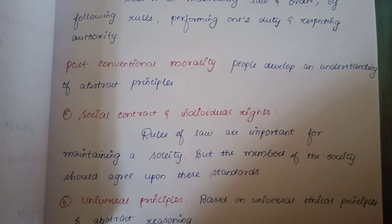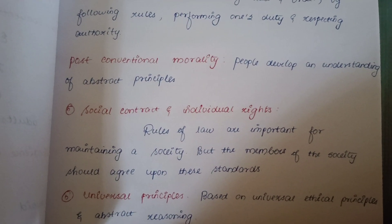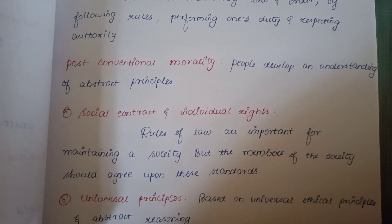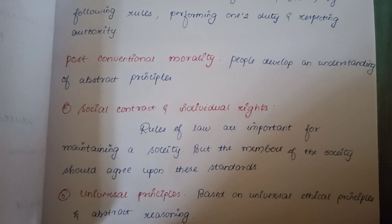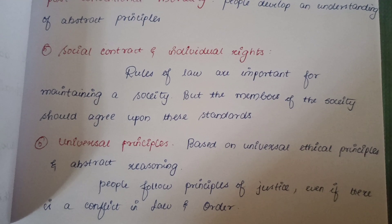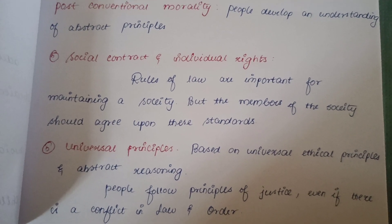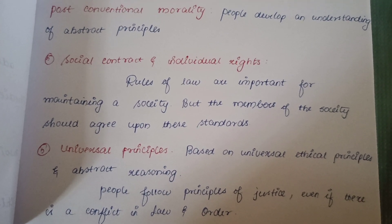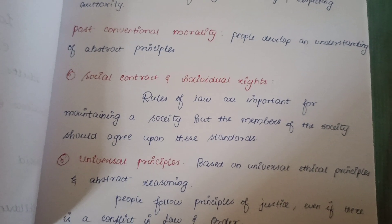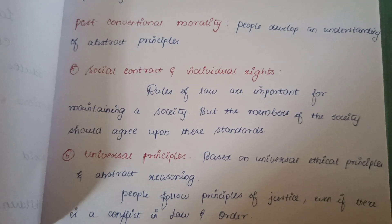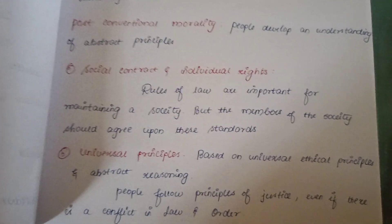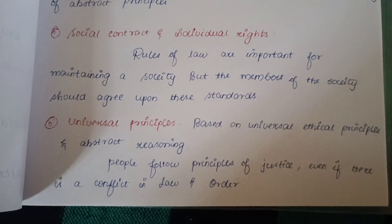Next is post-conventional morality, which is the last and final level of moral development. Here, understanding of abstract principles takes place. The first stage is social contract and individual rights. For society to be properly maintained, it is not enough for one individual to follow the law — all citizens of a country must cooperate with each other to follow the rules and regulations.